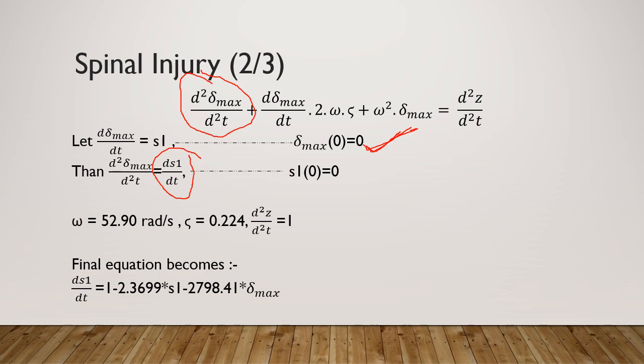Your spinal compression at the beginning of time is 0, and then s1, which is the rate of change, at the beginning of time is also 0. Then our initial condition will become [0, 0]. Now ω is constant having this value, ζ is constant having this value, and d²z/dt² equals 1.